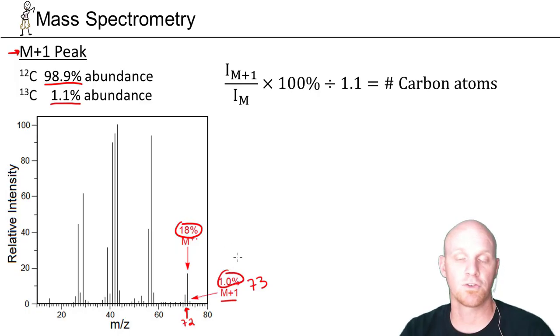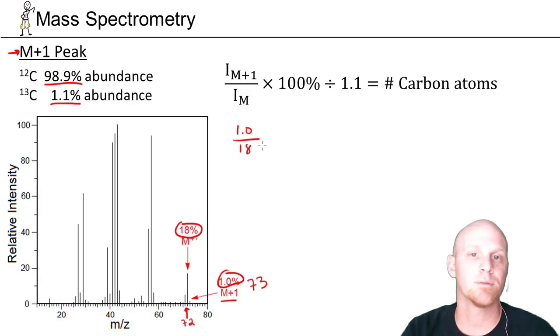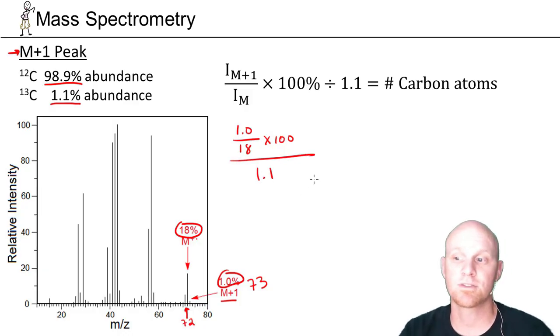If you know those relative intensities, you can actually determine pretty quickly how many carbons are in your compound. If you take the intensity of the M+1 peak, in this case 1%, divided by the intensity of the molecular ion peak, 18%, multiply by 100, and then divide this total by 1.1, the natural abundance of carbon, you actually get the number of carbons.